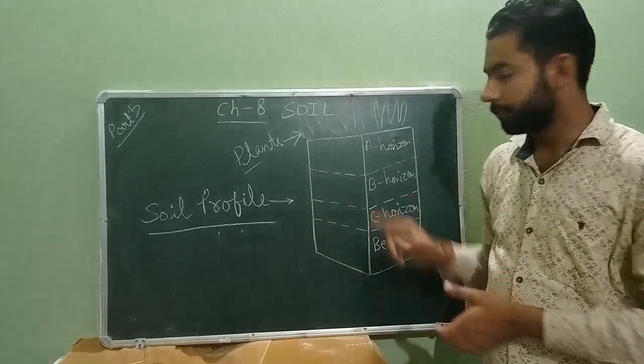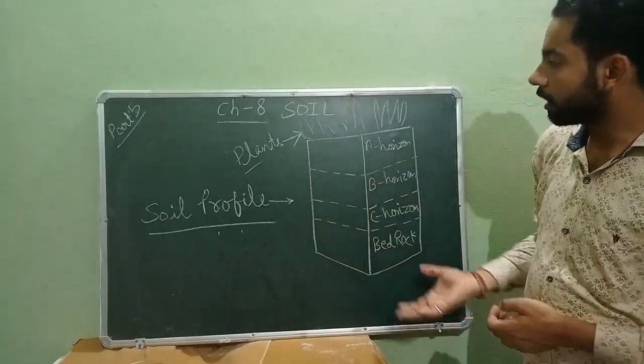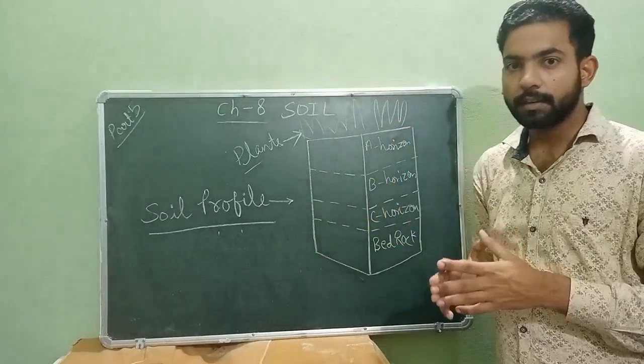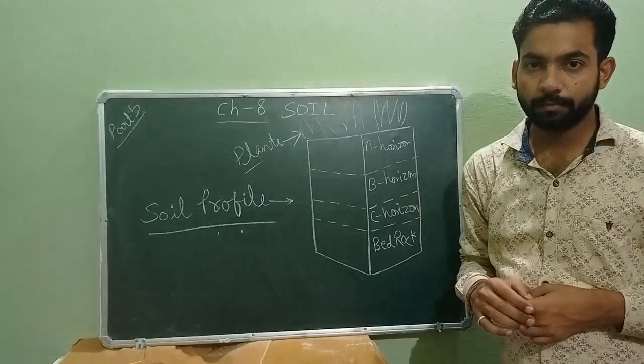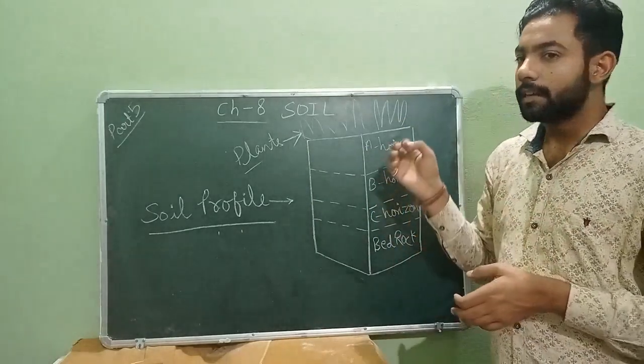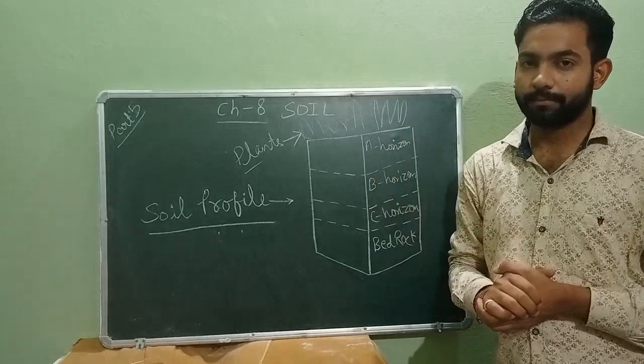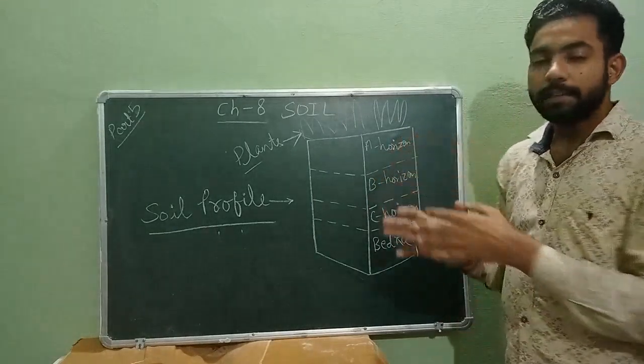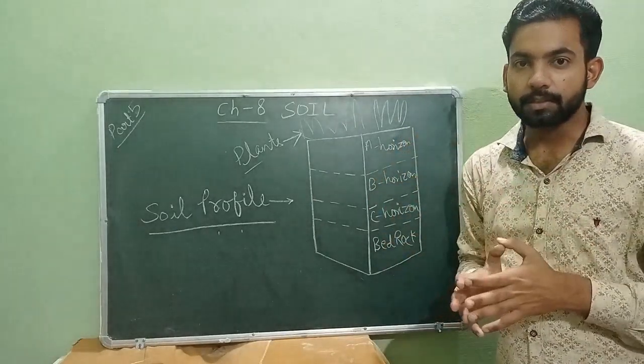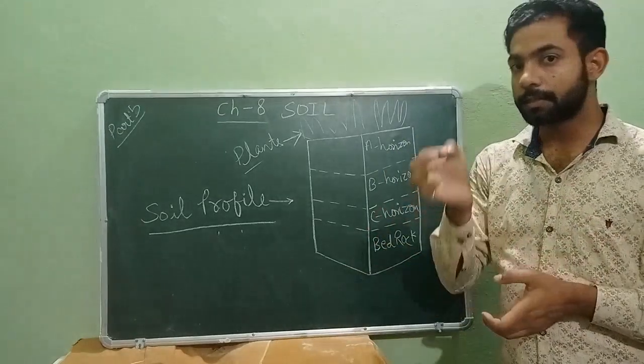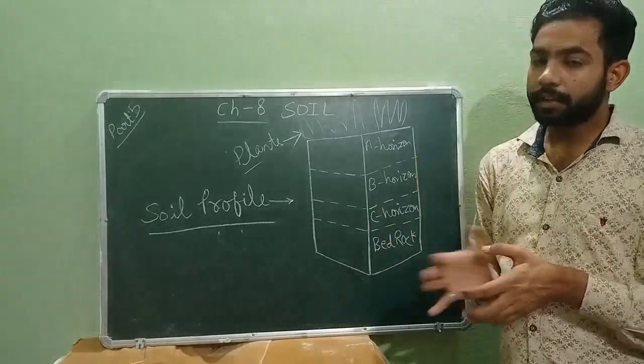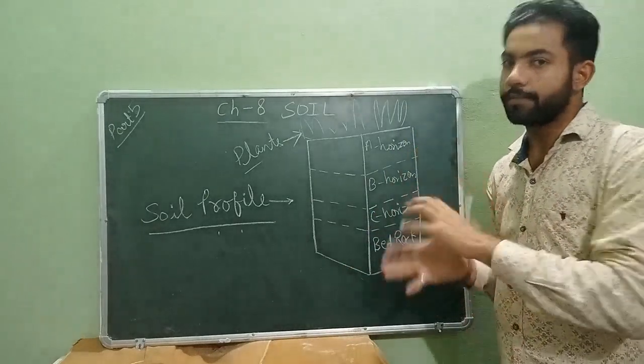A horizon: The uppermost layer of the earth is called A horizon. It is also known as topsoil. This layer is generally soft and porous in nature and can retain water and minerals. It is darkest in color and it contains humus, so it is very fertile.